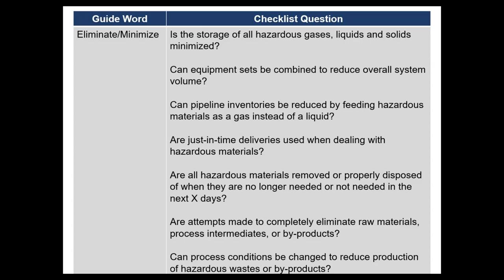Here are examples of elimination or minimization checklist questions for your HCA. These can be rephrased to prompt maximum creativity, such as using 'how might it be possible to do the following?' rather than 'is this possible?' Questions include: Is the storage of all hazardous gases, liquids, and solids minimized? Can equipment sets be combined to reduce overall system volume? Can pipeline inventories be reduced by feeding hazardous materials as a gas instead of a liquid? Are just-in-time deliveries used for hazardous materials? Can process conditions be changed to reduce production of hazardous waste or byproducts? These questions center around minimizing in-process inventories of hazardous raw materials, intermediates, and finished products.